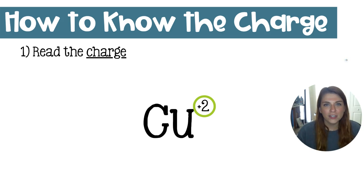So there's a few ways that we can figure out the specific charge on a transition metal ion. And first up is literally read the charge. It'll say Cu+1, Cu+2, it'll indicate telling you, hey, this is the charge of the ion.